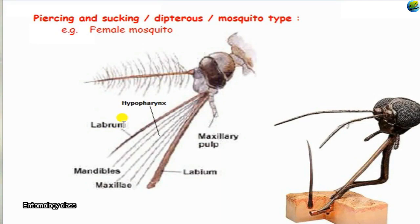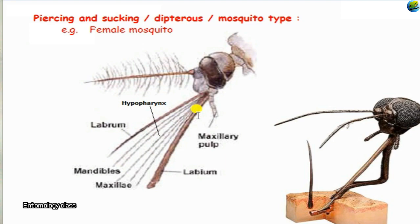The additional stylets are formed from the labrum-epipharynx — which we discussed as the tasting organ in the chewing and biting type of mouthpart. In the mosquito type, the labrum-epipharynx is turned into another tube or stylet. The hypopharynx — the part just above the labium — is also turned into a stylet.